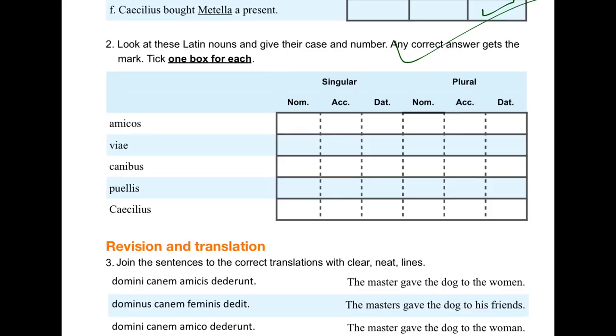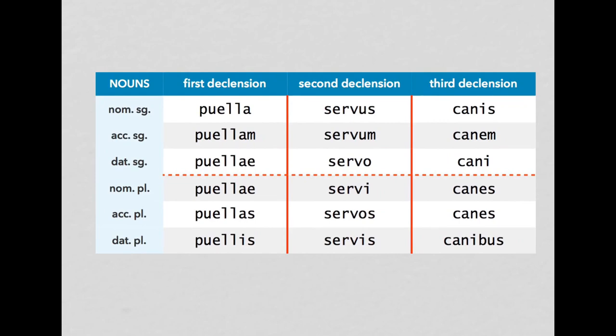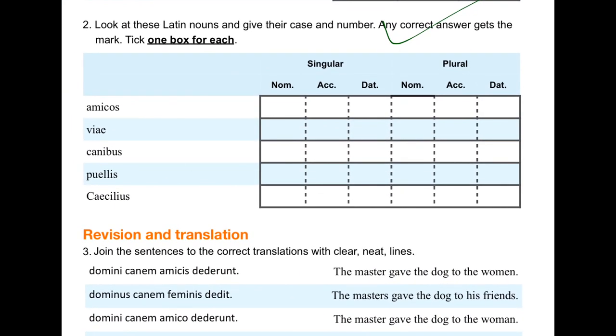Zooming down to section two now. This is simply a question of knowing the endings. With one possible confusion that I'll talk about in a minute. So we should have learnt these, the endings here with the new row for the dative singular and dative plural. I shan't go across to this. I'll just assume that we know them. So that means that amicos is going to be accusative plural. That you learnt from stage eight. Caecilius, the last one, is obviously nominative singular. The first one.